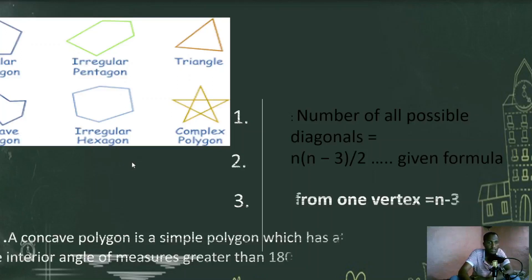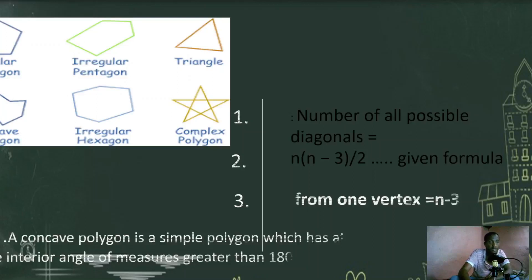A convex polygon means each angle must be less than 180 degrees. As you know, we have triangle, quadrilaterals — from quadrilaterals: square, rectangle, pentagon, rhombus — all of them are convex polygons. But here, as you see, you have a concave octagon. If a polygon has eight sides, we call that an octagon. So this is a concave octagon.